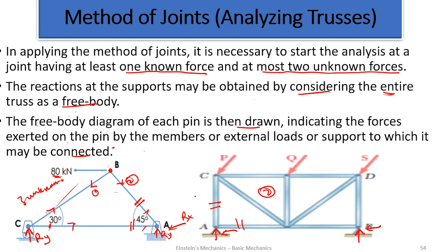So basically, this is the method of joints. It's not difficult — it's one of the easiest ways of analyzing forces in the members. I like using it most because it's very simple: you just apply ΣFx = 0 and ΣFy = 0, and you are good to go. We have four problems on the method of joints, which are solved in the next episode. Thank you.